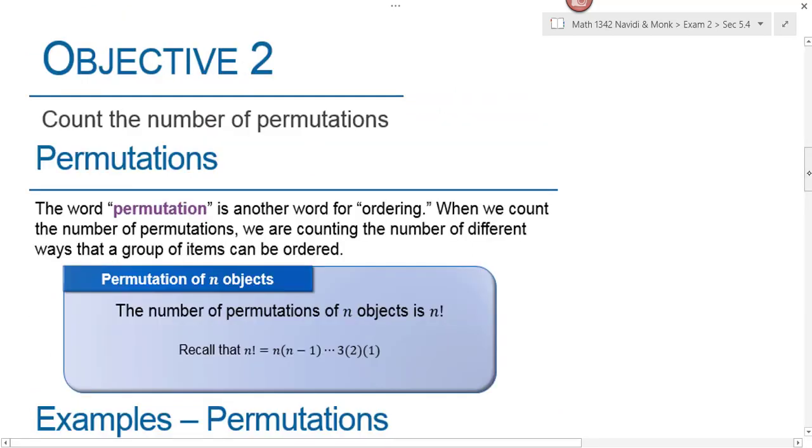Objective 2 is counting the number of permutations. The word permutation is another word for ordering. We use permutation anytime order matters to us. When we count the number of permutations, we're counting the number of different ways that a group of items can be ordered. If we're going to use all of the items that are available to us, we use this symbol right here that's called a factorial. You only thought exclamation points belonged in English class, didn't you? Now you see that we use them in math, and it's a mathematical operation that means to multiply—start with a number, and it has to be a whole number, and then subtract 1 from that number and multiply going down.